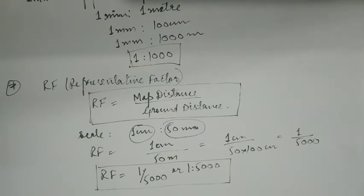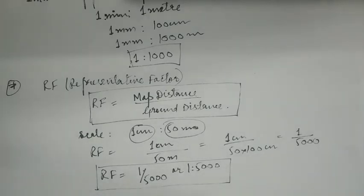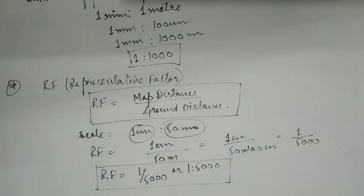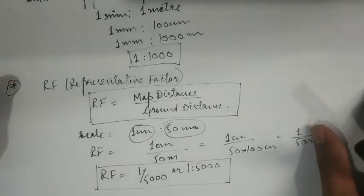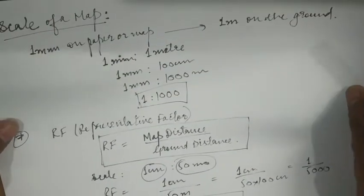There are different types of scale. One is plane scale, another is diagonal scale. Actually there are three types: first is engineer's scale, another is representative fraction, and third is graphical scale. These types of scale will be covered further.